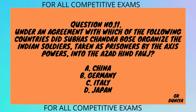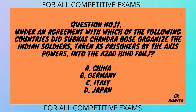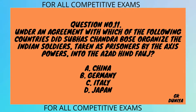Question No. 11. Under an agreement with which of the following countries did Subhash Chandra Bose organize the Indian soldiers, taken as prisoners by the Axis powers, into the Azad Hind Fauj? A. China, B. Germany, C. Italy, D. Japan.